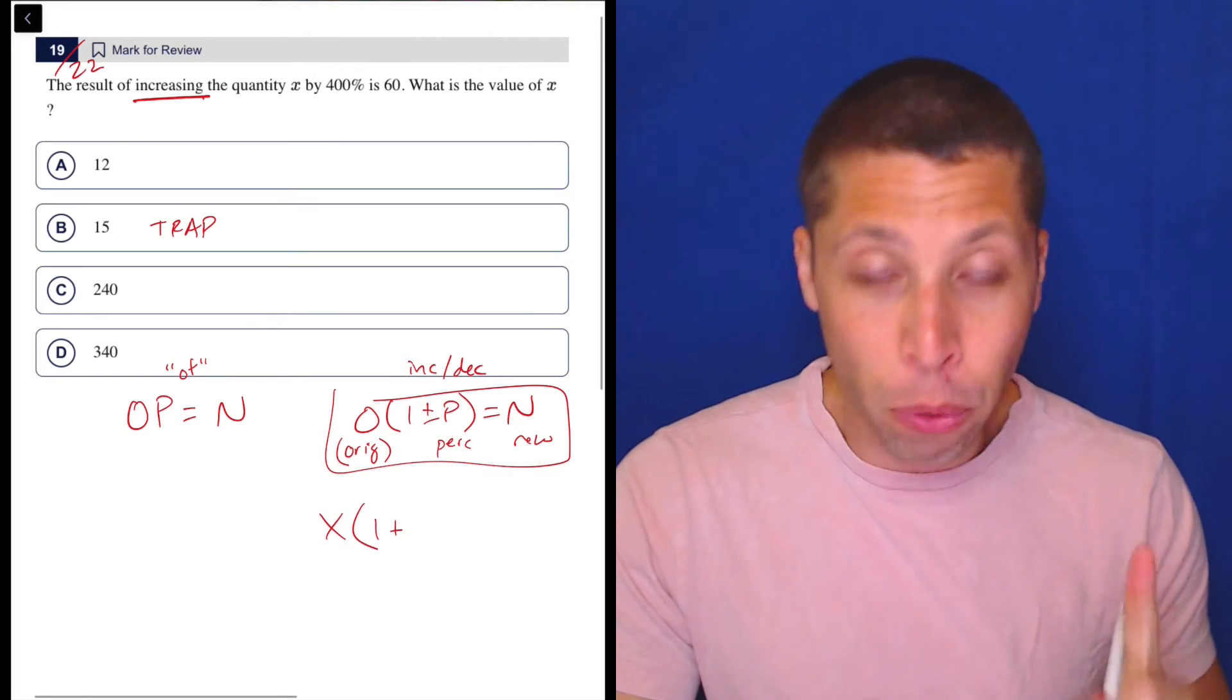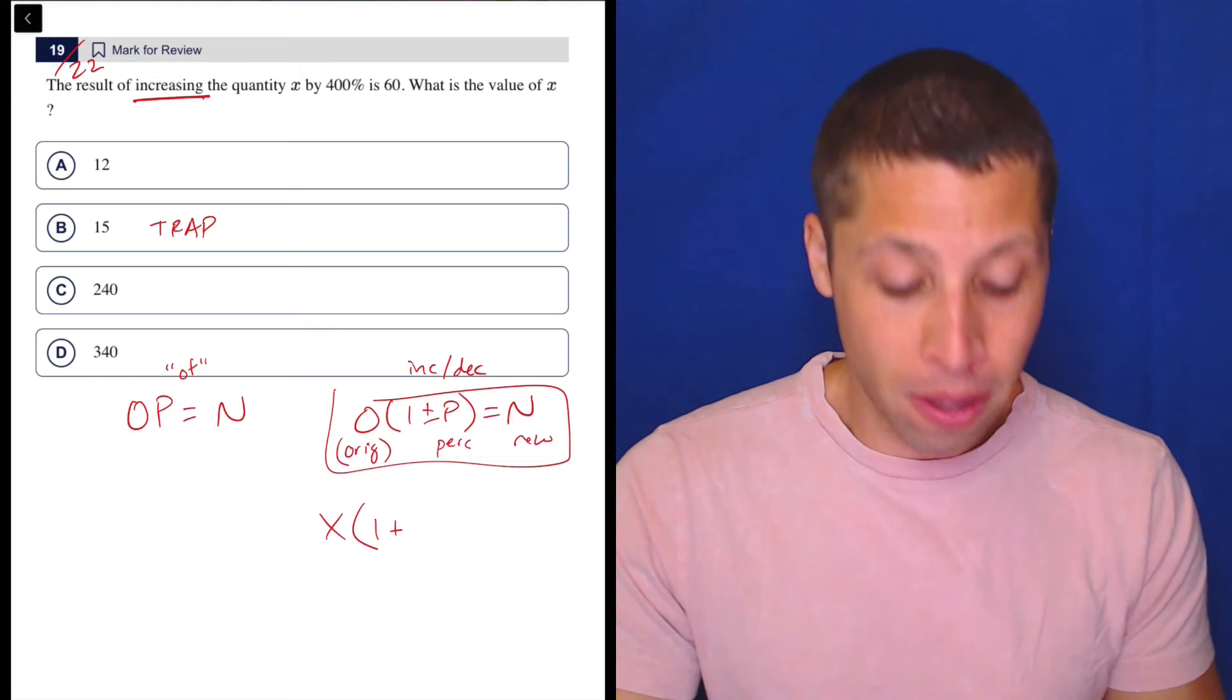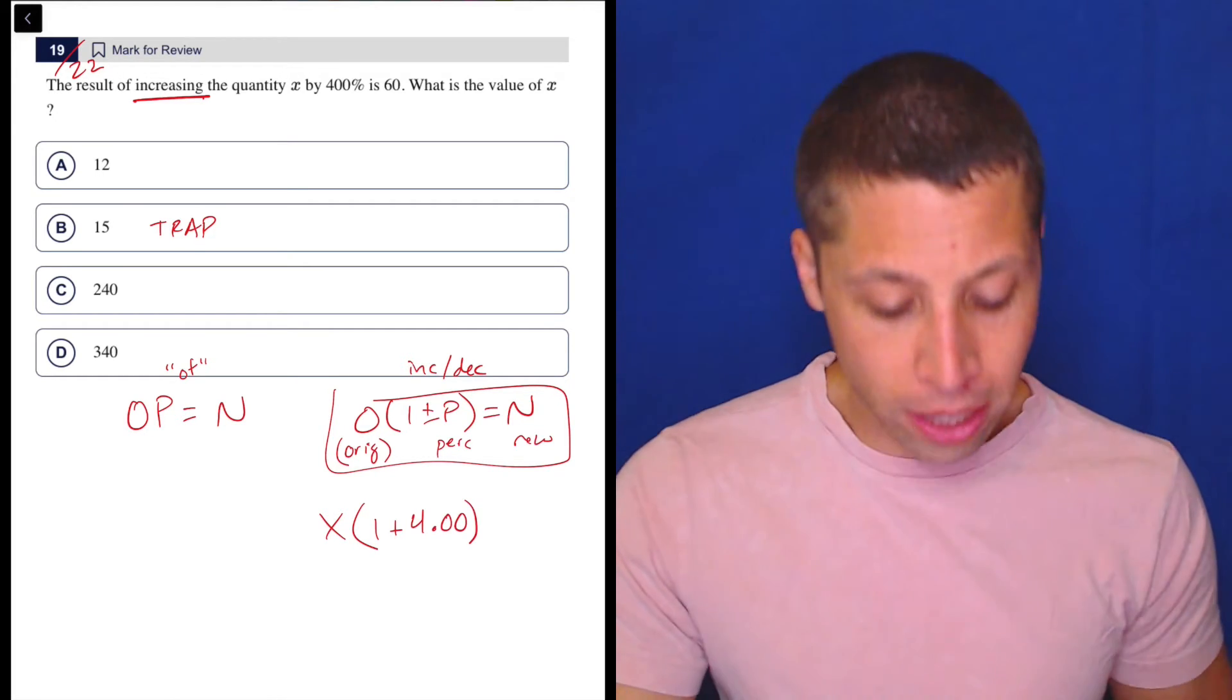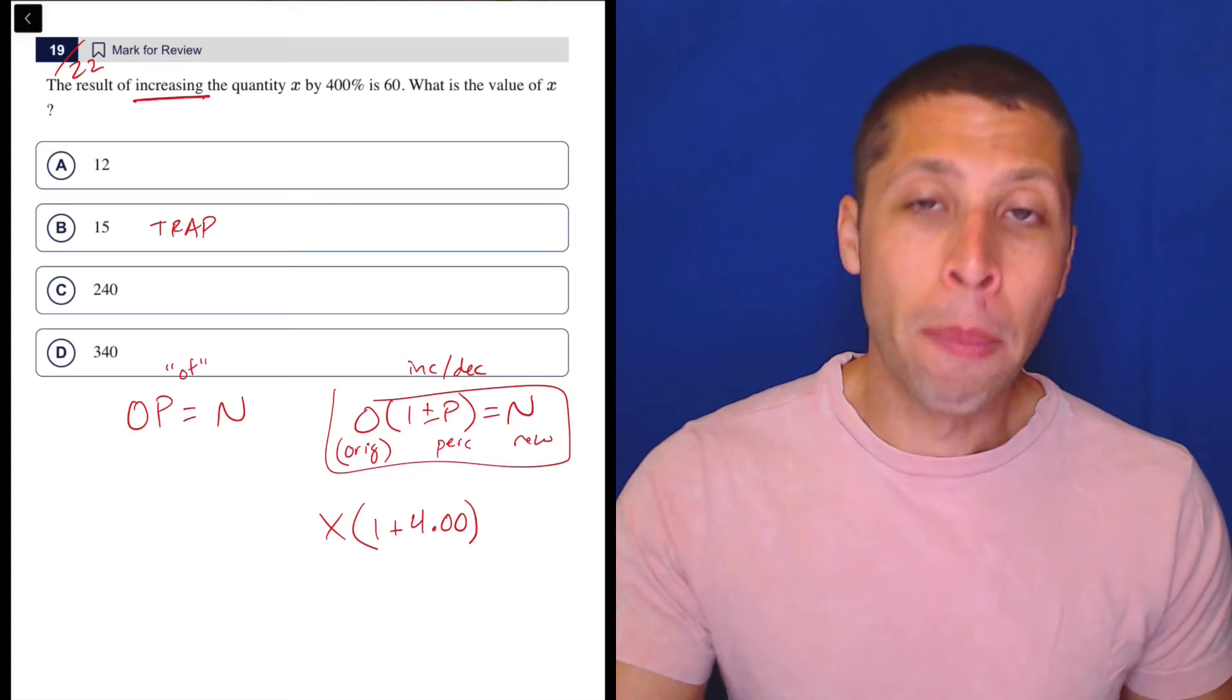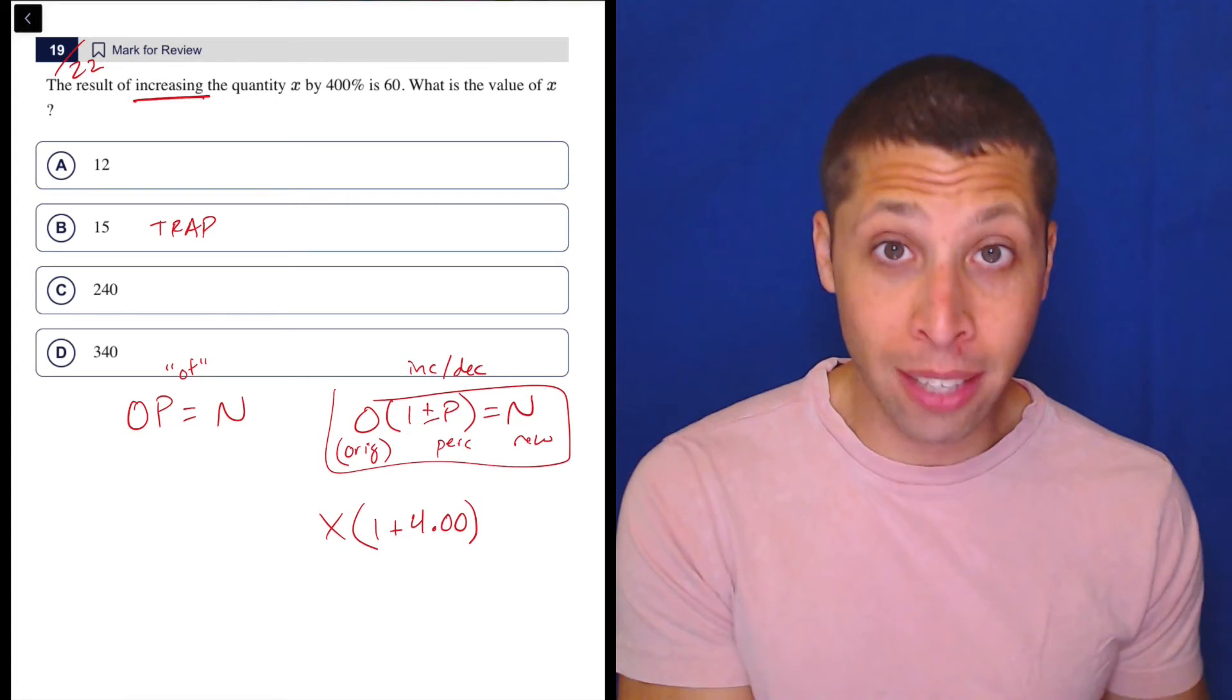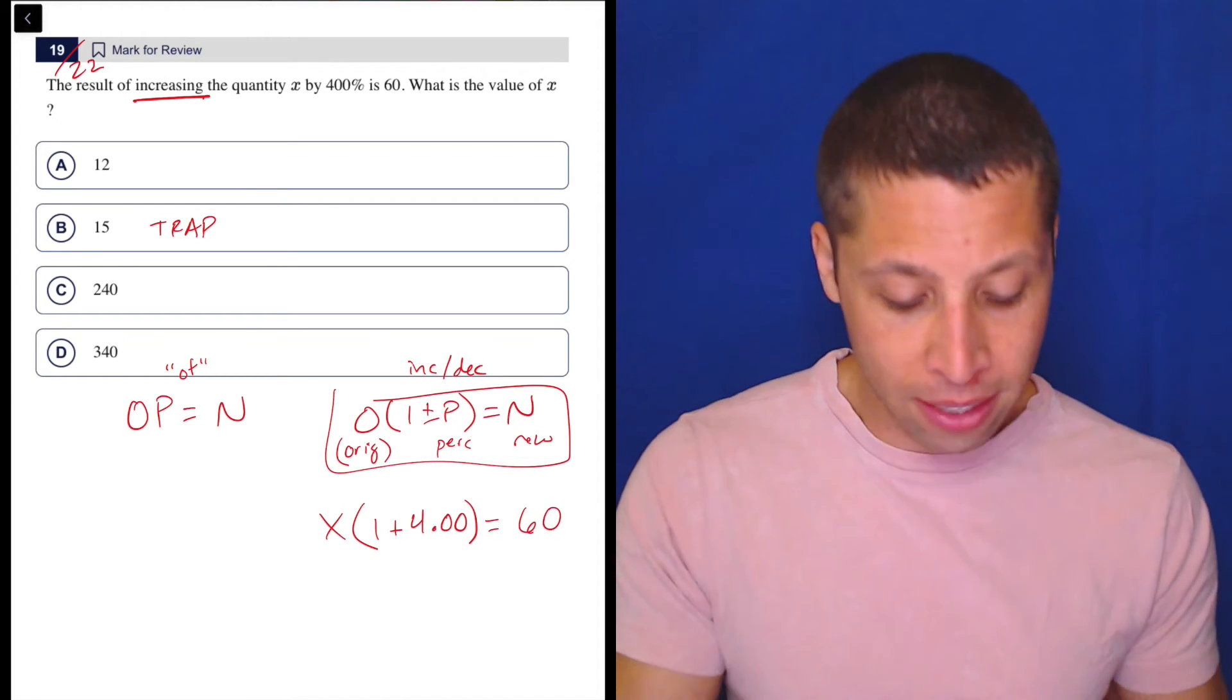We are increasing it by 400%, so it's a plus because it's an increase. And then the P is going to be four, or to make it more symmetrical with percentages, I'm going to make it 4.00. Because remember, we are moving the decimal place two spots, and that's how we convert a percentage into a decimal. So you have to do that for this formula. And then the new value they give us is 60.